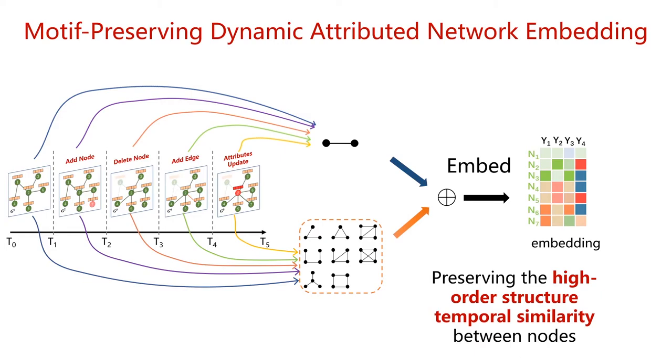So the question is how to use network motifs to assist in modeling dynamic network embedding. Combining the above questions, we are concerned about how to use the relationship of pairwise nodes to capture the direct dynamics of network structure, and use network motifs to capture node preference changes. Finally, the two dynamic features are fused to obtain network embedding.